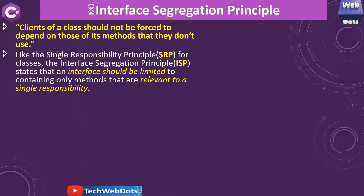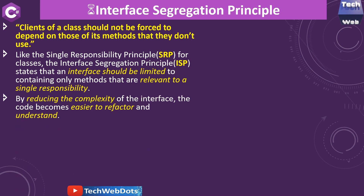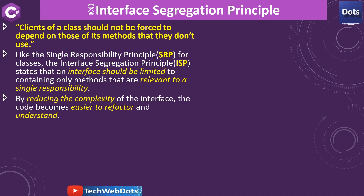It means only the methods which are required for the client should be implemented in the class. Like the Single Responsibility Principle we already saw in the first principle for classes, the Interface Segregation Principle states that an interface should be limited to containing only methods that are relevant to a single responsibility, reducing the complexity of the interface.